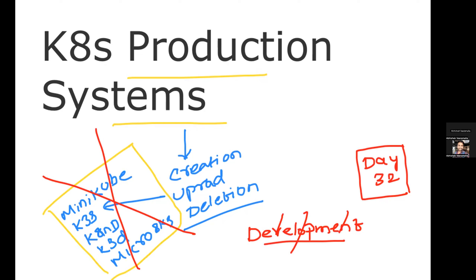Even if you go to the Minikube official documentation, you'll see it's just a local Kubernetes cluster and should not be used in production. If you try to get into a DevOps position or you're being interviewed for Kubernetes or DevOps administrator positions, one of your primary responsibilities would be to create infrastructure for your organization — and that includes managing the lifecycle of your Kubernetes clusters.